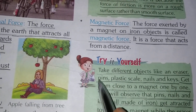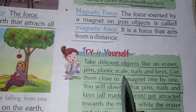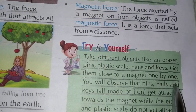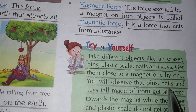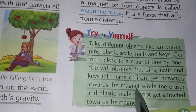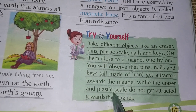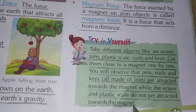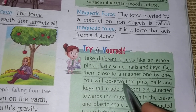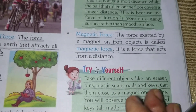Now we will do one more activity. Take two different objects like an eraser, pins, plastic scale, nails, and keys. Get them close to the magnet one by one. We will observe that pins, nails, and keys — which are made of iron — get attracted towards the magnet. While the eraser, plastic, books, and pencils do not get attracted. Only iron things like nails and pins get attracted towards a magnet.